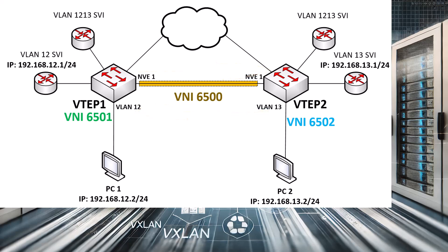Notice also that in symmetric IRB, VTEP2 doesn't need to be associated with the VNI serving PC1. Indeed, it can be completely oblivious to that VNI's existence, and that is the key benefit of symmetric IRB.